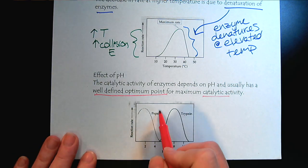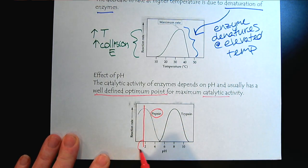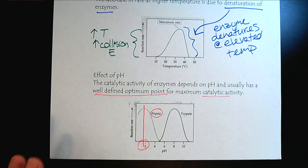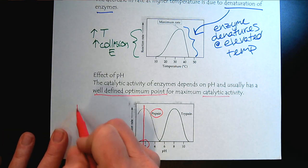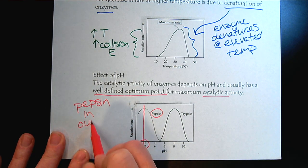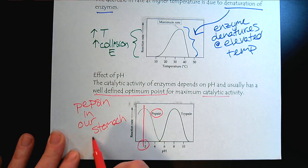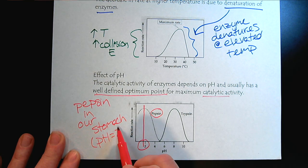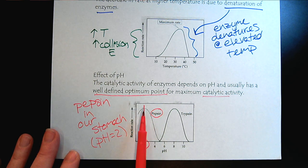So if we look at pepsin right here, notice where its optimum pH is, really close to pH 2. So imagine where you think we would find pepsin, where in our body do we have such a low pH? So pepsin is a digestive enzyme in our stomach. And so we recognize with the stomach acid, our stomach is at about pH 2 or so. So we see that for the enzyme pepsin, its optimum pH is where we think about stomach acid.